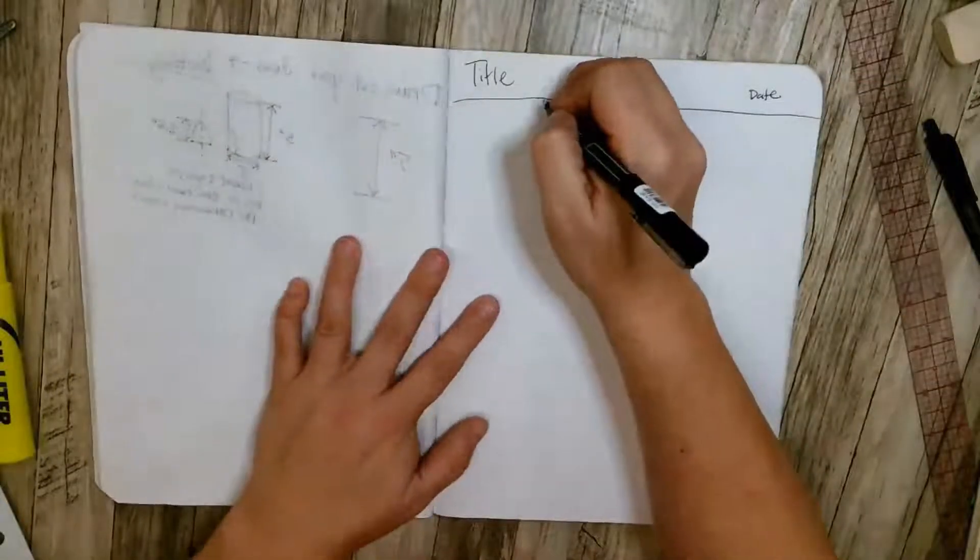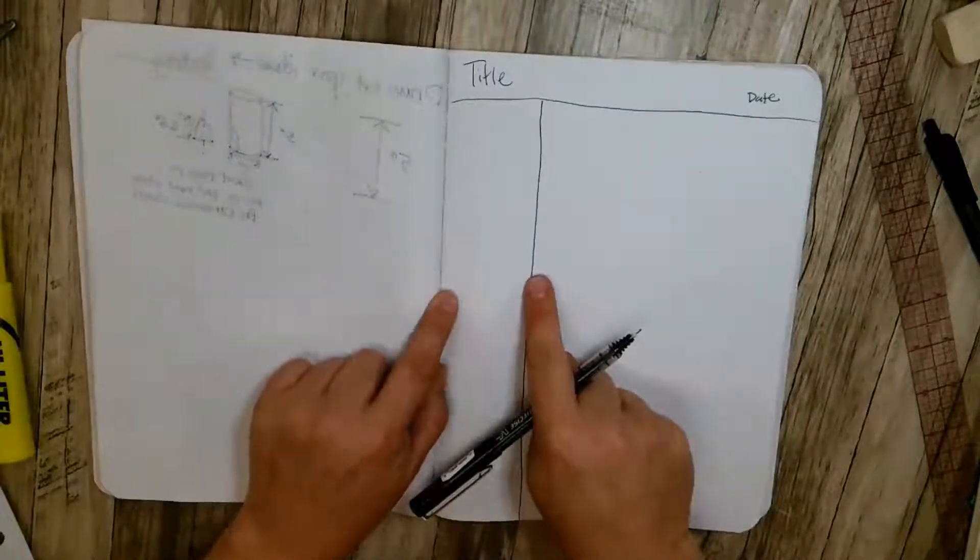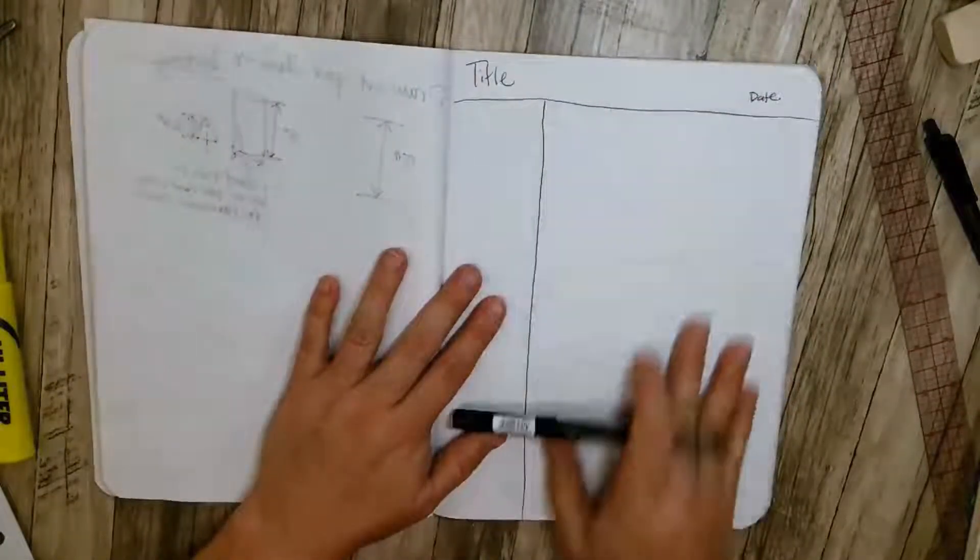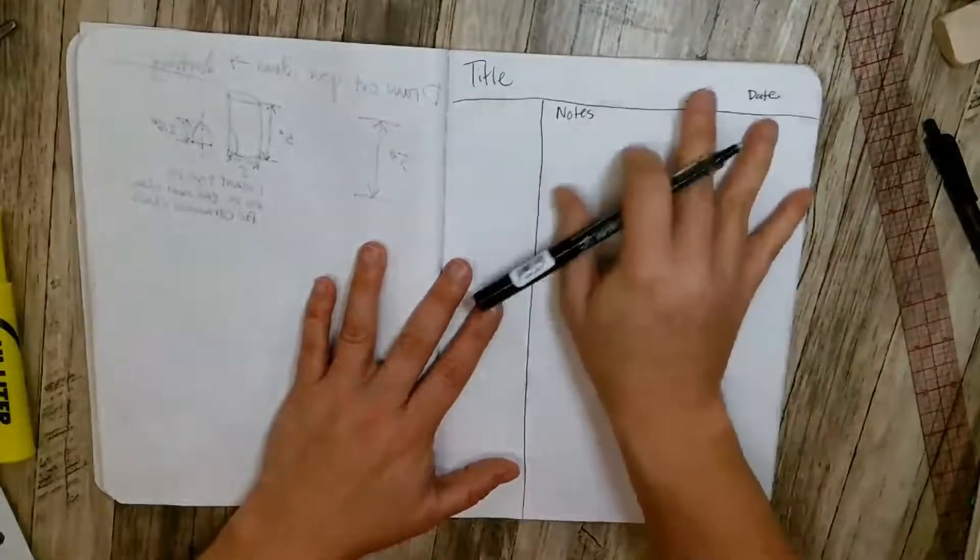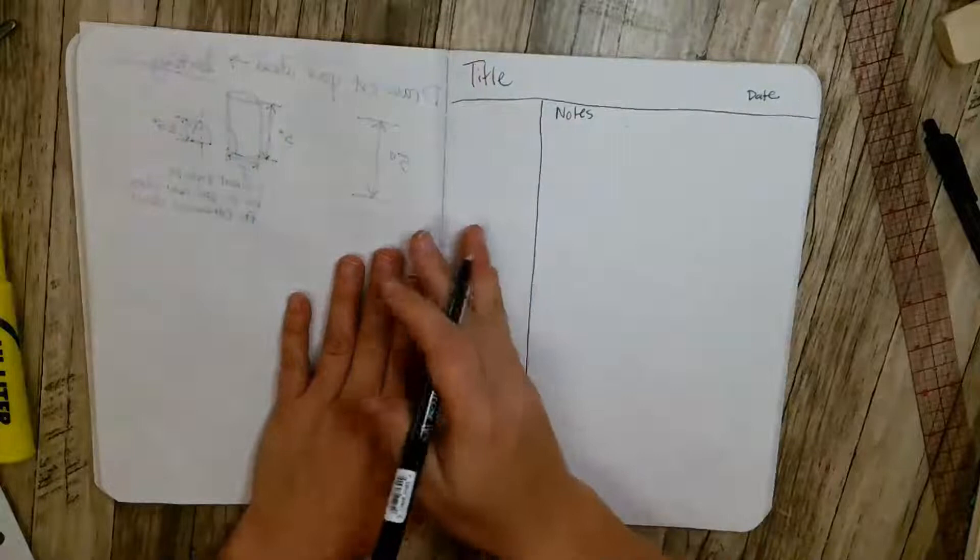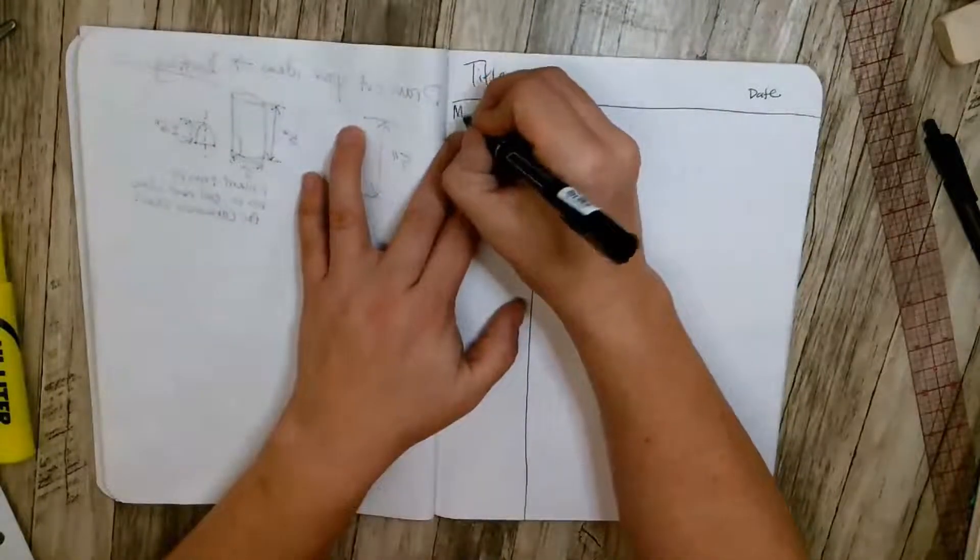Then I'm going to have you draw a line about a quarter of the way across. You're going to take all of the bulk of your notes in here, right in here. And then when you go back, you're going to pull out the main ideas and put the main ideas here.